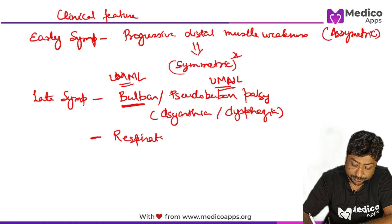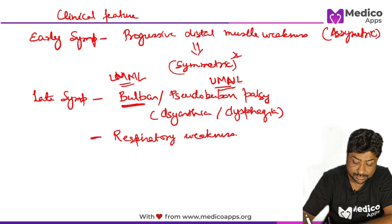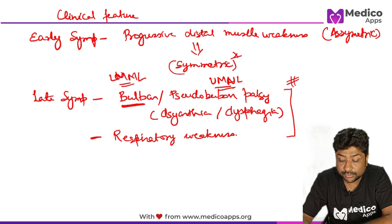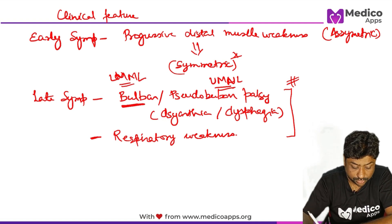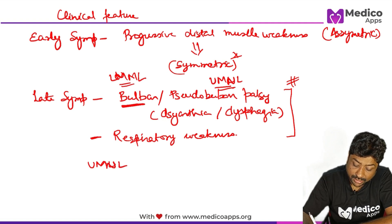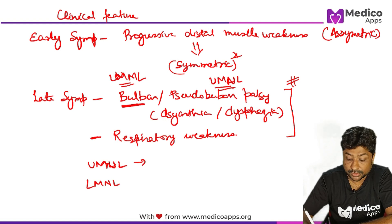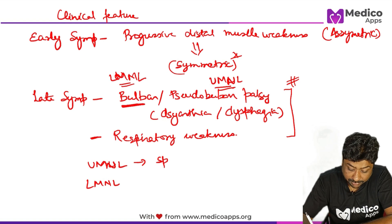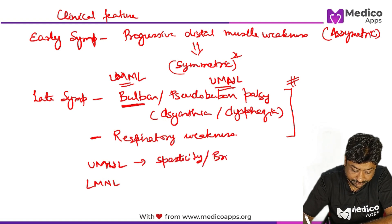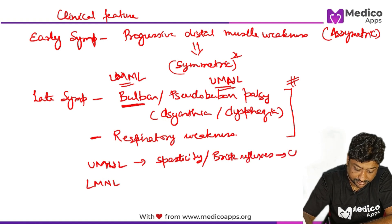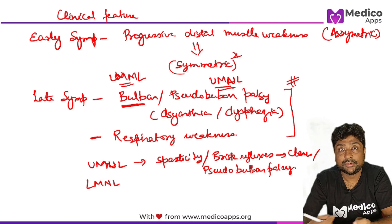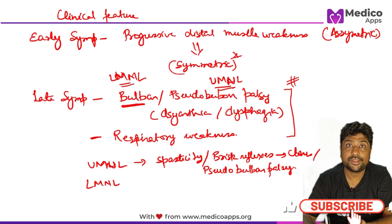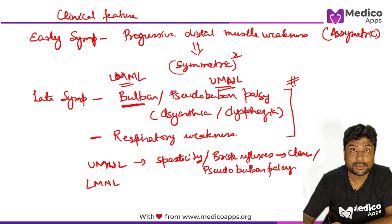Ultimately, there will be respiratory weakness, and most of these patients die because of respiratory failure. Supportive care for dysphagia and respiratory weakness is very important. Upper motor neuron lesion features include spasticity, brisk reflexes, clonus, and features of pseudobulbar palsy — including emotional lability, where the patient may start crying or laughing without any reason.